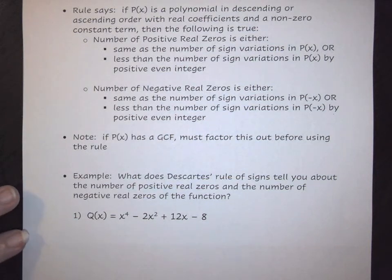In this short video we are going to look at Descartes' rule of signs. Descartes' rule is used to determine the number of possible positive and negative real zeros.